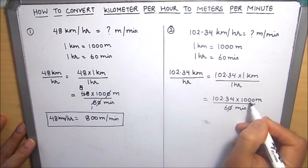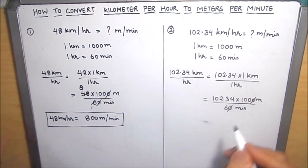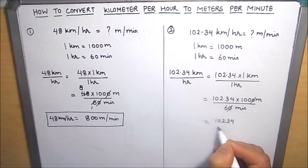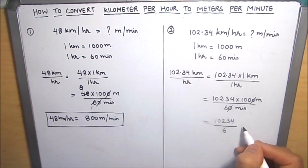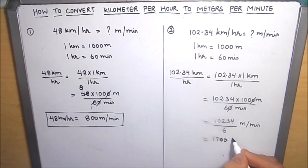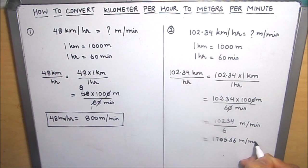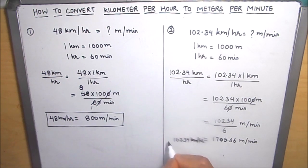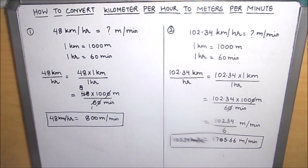So the zeros get cancelled, and after solving, this comes out to be 102.34 divided by 6 meters per minute, which is equal to 1705.66 meters per minute. So our final answer is 102.34 kilometer per hour is equal to 1705.66 meters per minute.